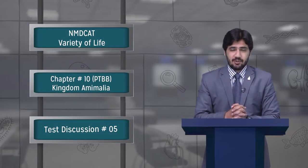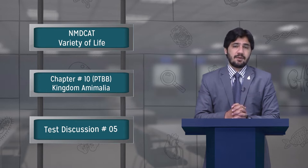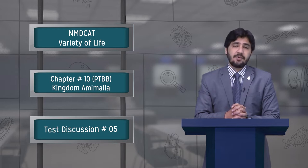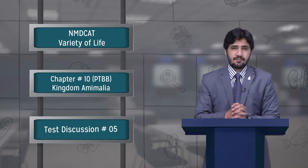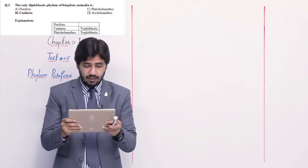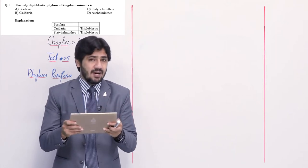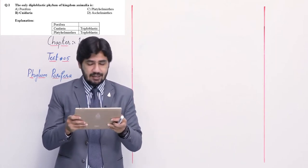Bismillah ar-Rahman ar-Raheem. Assalamualaikum dear students. I am Atavur Rahman, teaching you biology in MDCAD session. Today we will discuss UHS topic: variety of life and its related kingdom animalia. In this lecture we have studied phylum Porifera up to phylum Mollusca. This is Test number 5 discussion — we move towards the board. The first question is: the only diploblastic phylum of kingdom animalia is: alpha Porifera, beta Nideria, charlie Platyhelminthes, and delta Ashhelminthes.